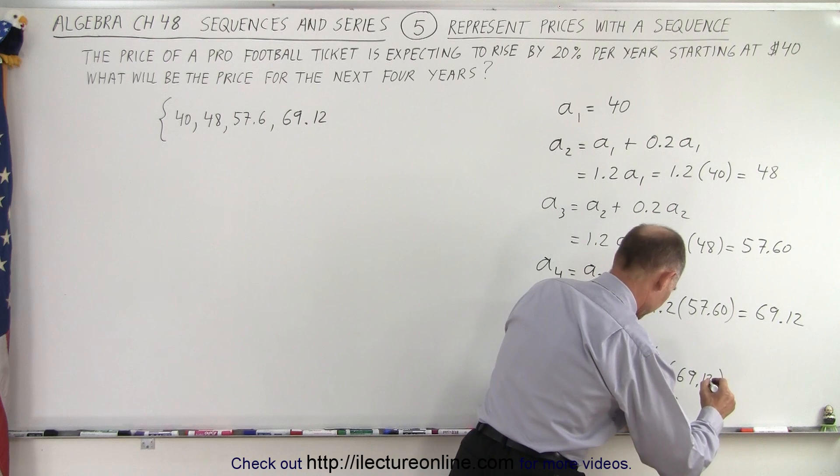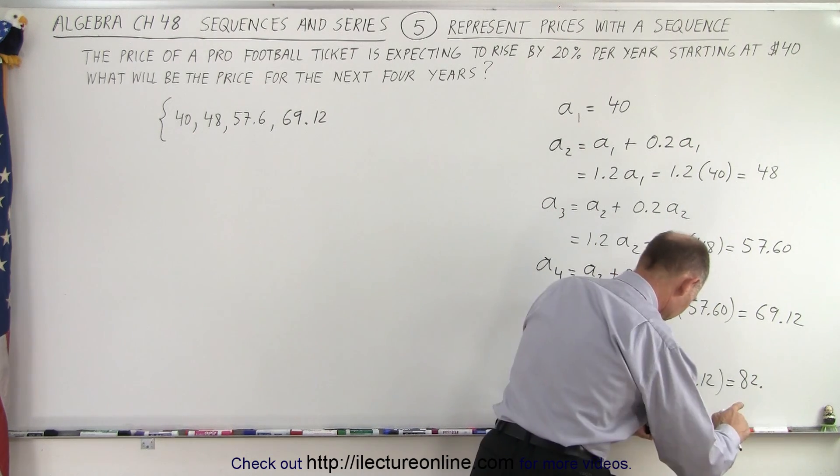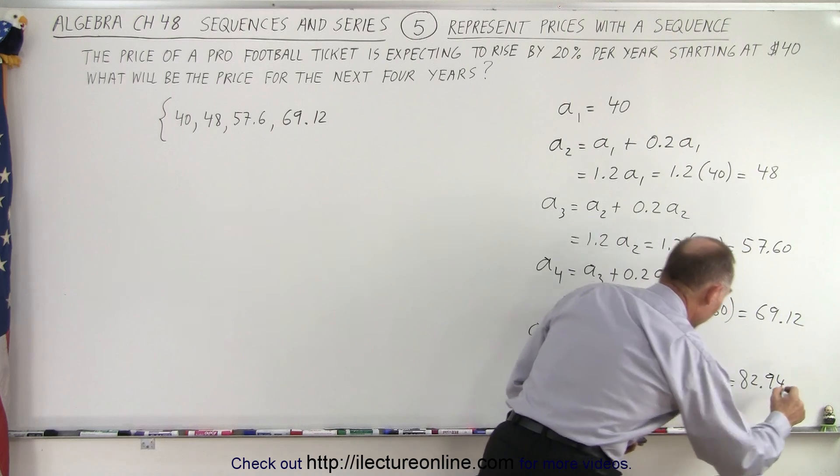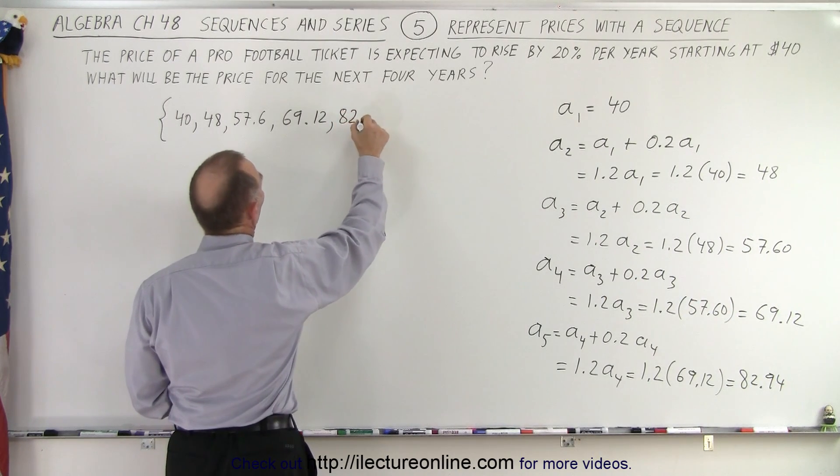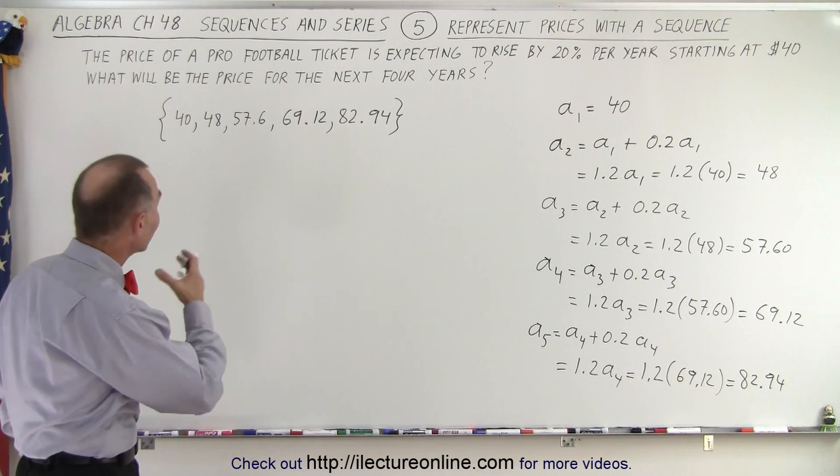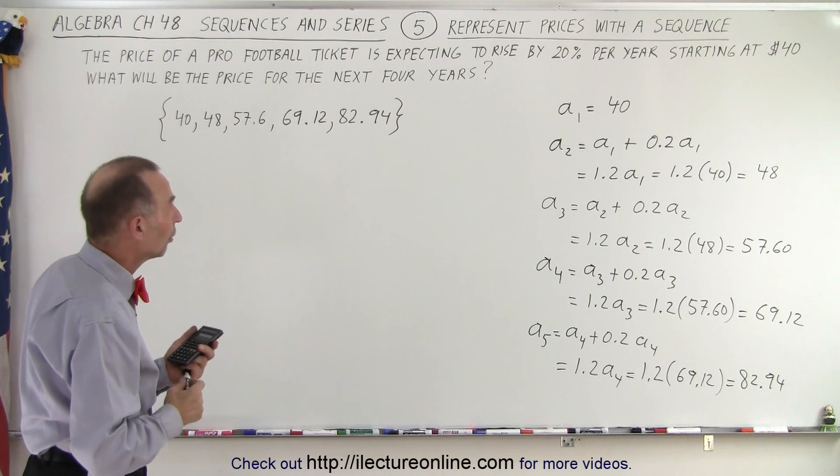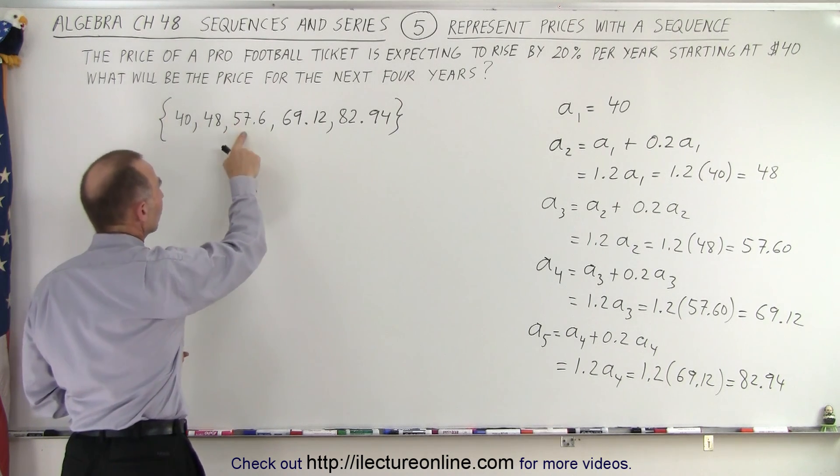And that gives us 82.94. There we go, and so that would be the next one, 82.94. And so there you go, there's your sequence of five consecutive prices for the ticket: $40 is current, and then for each consecutive year.